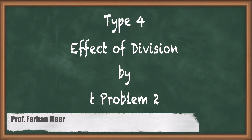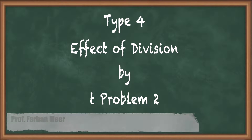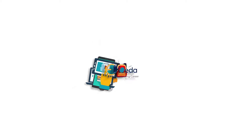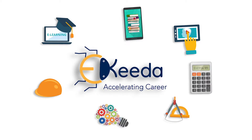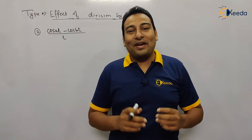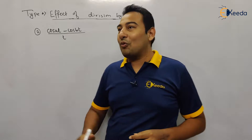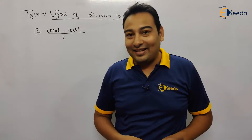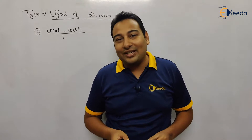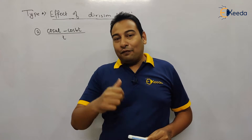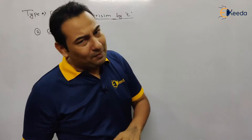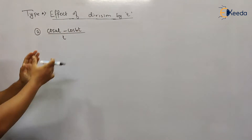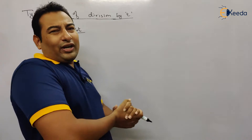Hello friends, in this video we'll be discussing Laplace transform — effect of division by t, problem number two. Welcome back friends. Let's discuss the second problem of effect of division by t. The problem is (cos(at) - cos(bt)) / t. The first problem was e^(-t) · sin(t) / t. Hope you understood that problem. Now let's move on and discuss this particular example.